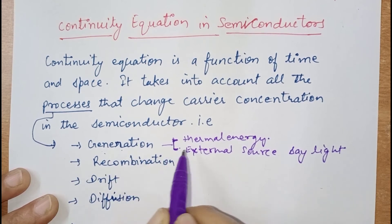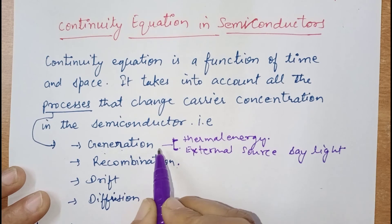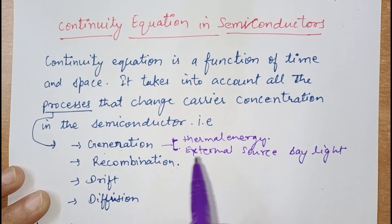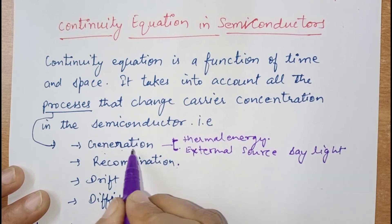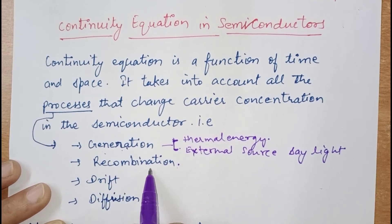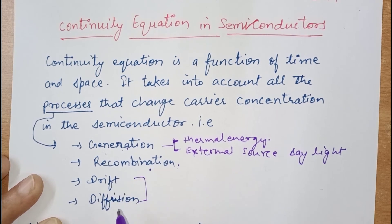We add the things that increase the carrier concentration and subtract the things that decrease the carrier concentration in a semiconductor. So we will add generation and subtract recombination, and then we will consider drift and diffusion current.